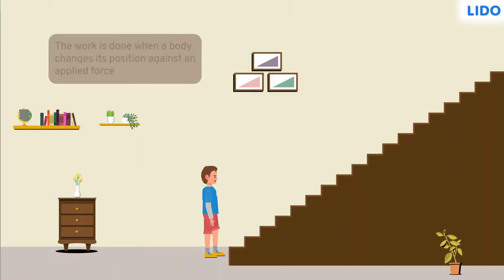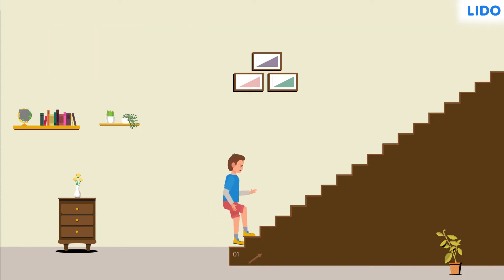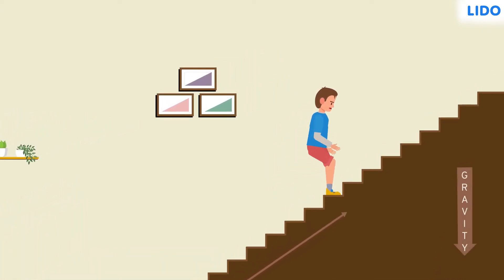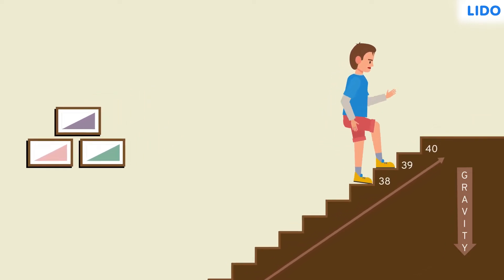You know, physics tells us that work is done when a body changes its position against an applied force. Rajan climbed against the force of gravity. He changed his position and after climbing over 40 steps, he got exhausted.